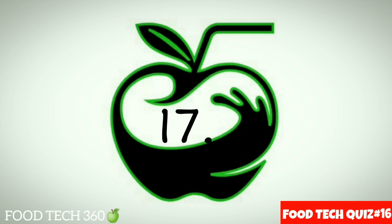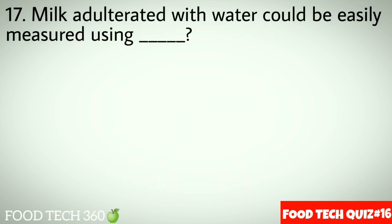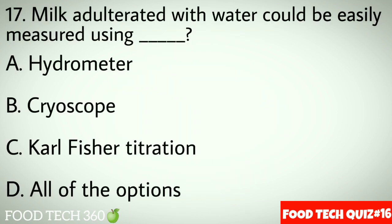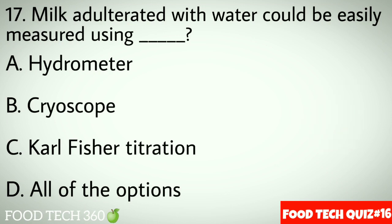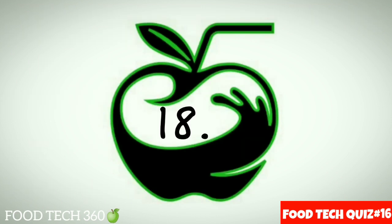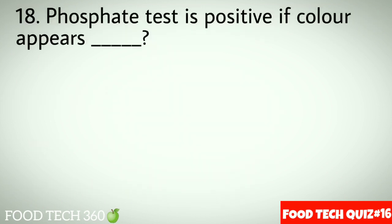Question No.17: Milk adulteration with water could be easily measured using dash. Options A: Hydrometer. B: Cryoscope. C: Carl Fischer titration. D: All of the options. Correct answer B: Cryoscope.